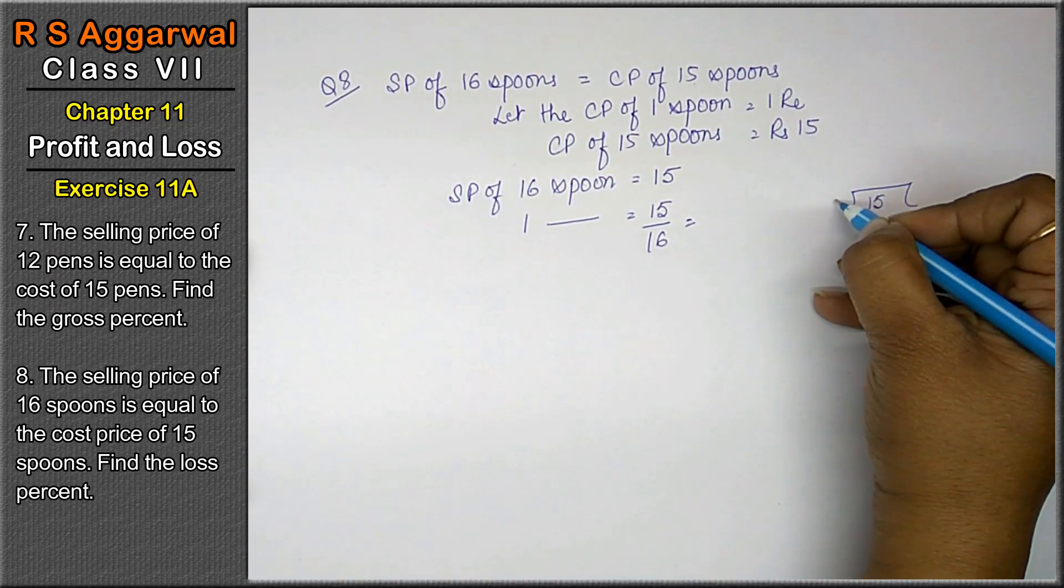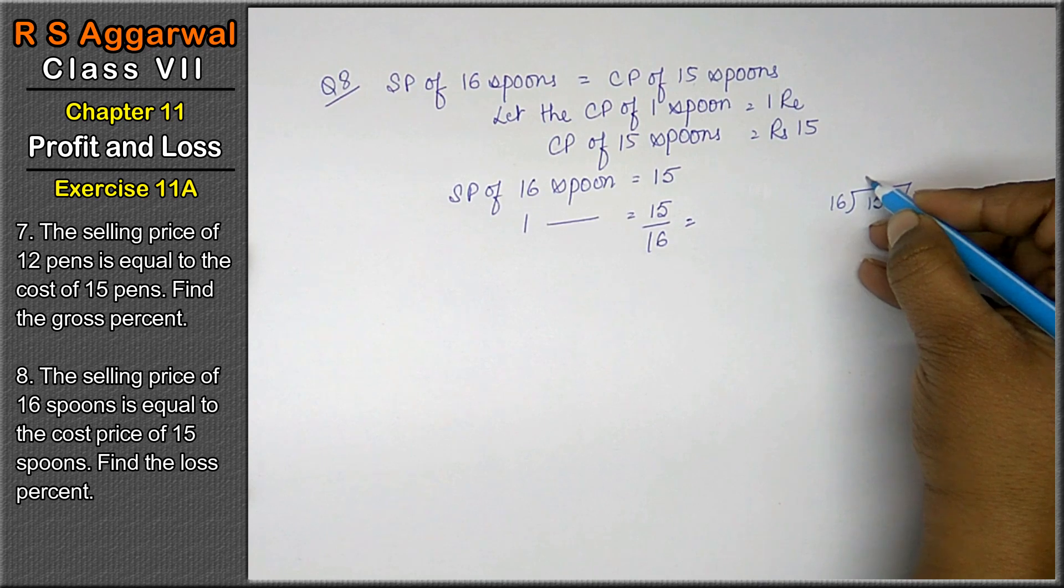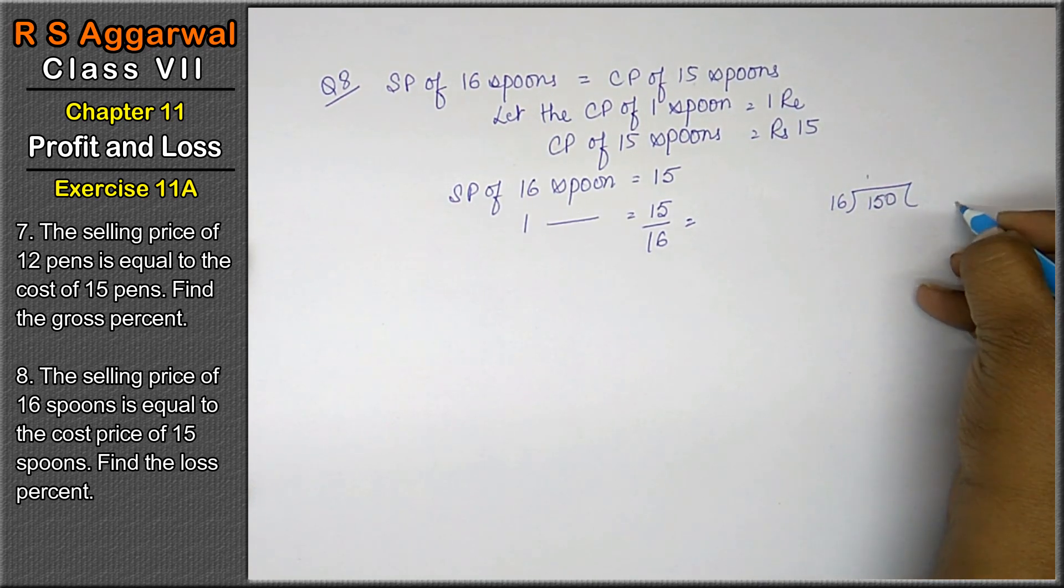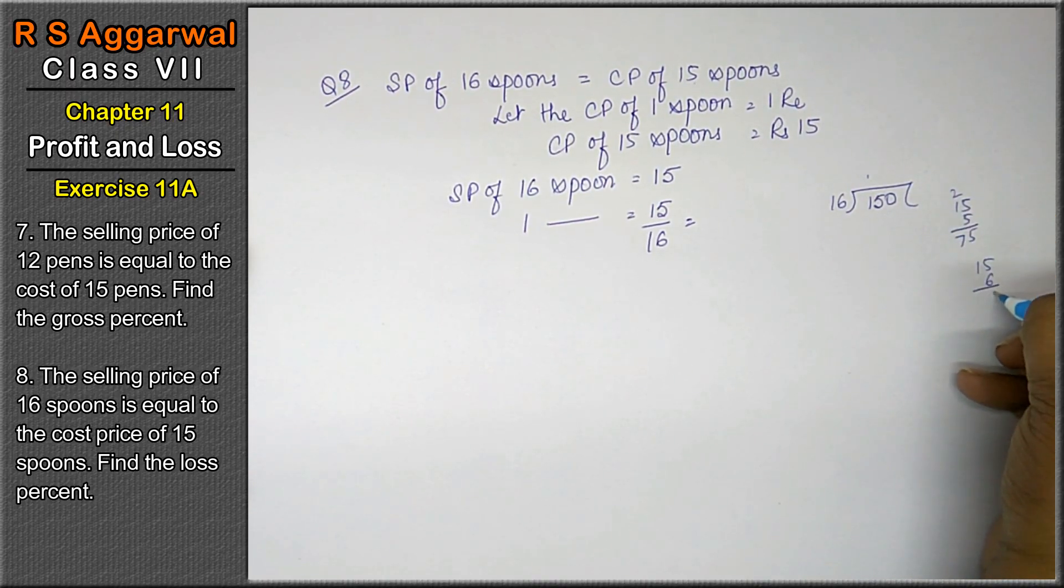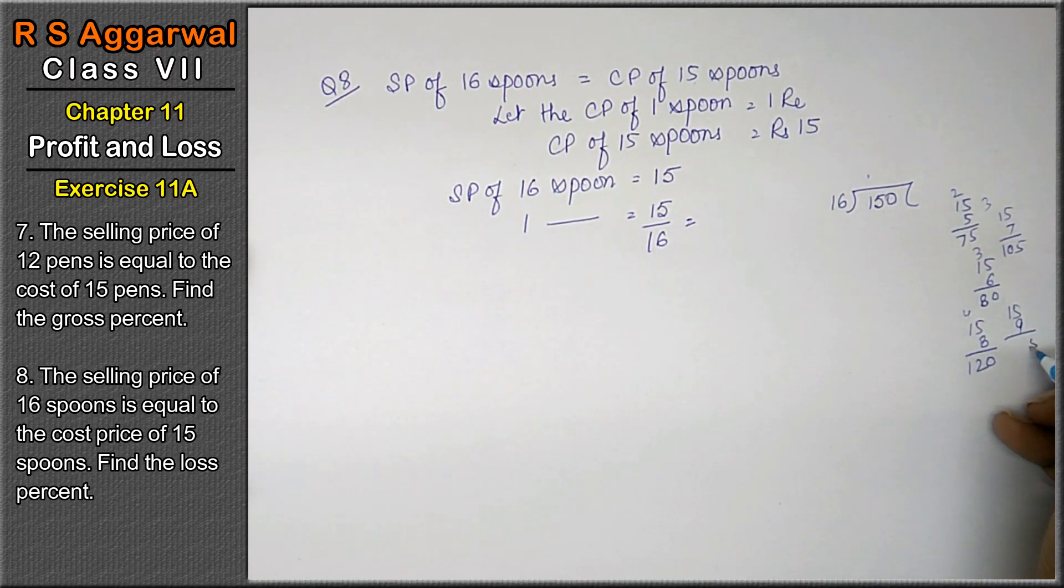That means 15 rupees for 16 spoons, so one spoon selling price is 15 upon 16. Let me divide this: 15 divided by 16.